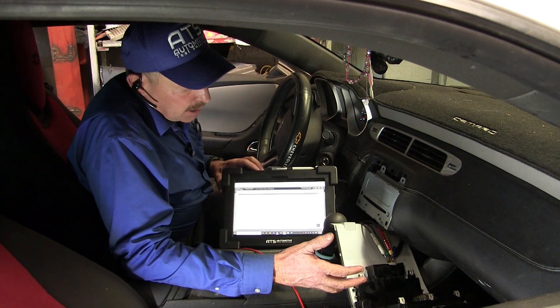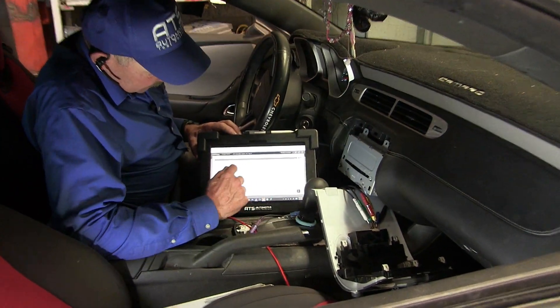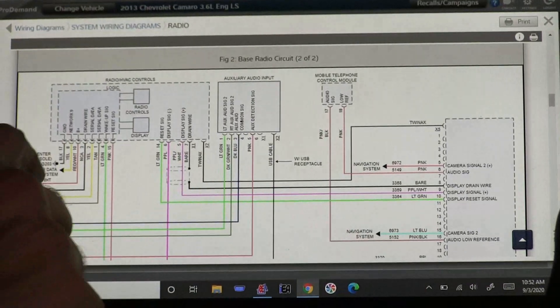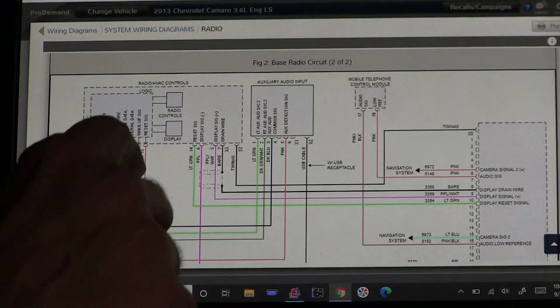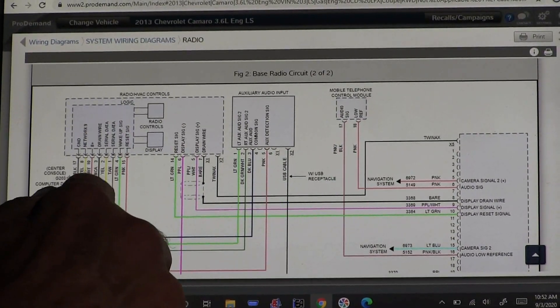So now I've removed the control head for the radio and I've got the wiring accessed and I've got a wiring diagram. So I found the ground, the power, the CAN high, CAN low, and I found an enable wire.